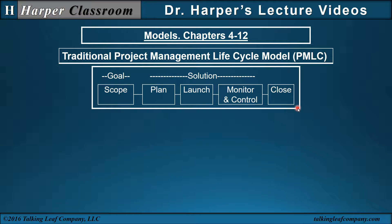Wysocki organizes his content starting with a project management lifecycle model. Here's an example of the traditional project management lifecycle model: scope, plan, launch, monitor and control, and close. In the scope phase, he describes a goal — the primary purpose or objective of the project — and the solution, which is how to achieve the goal.